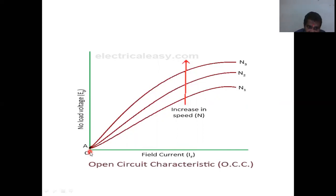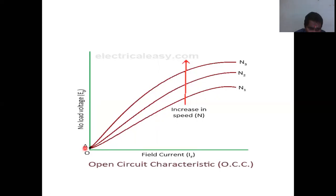One important point: even though field current is zero, there is still a small voltage present, called residual voltage. This is due to residual magnetism — the magnetic material used retains a small amount of magnetism, which produces a small voltage even when field current is zero.